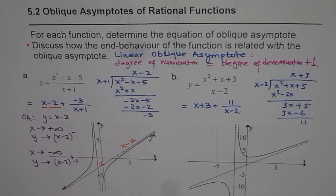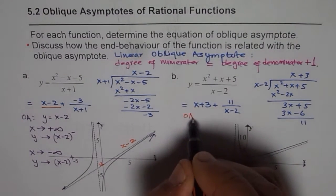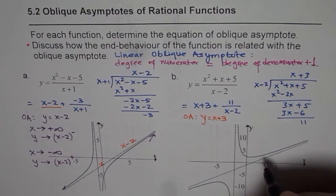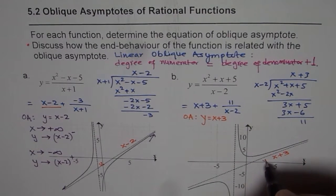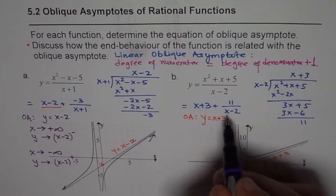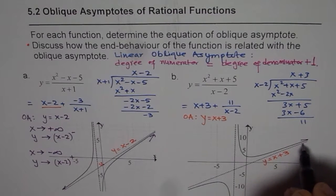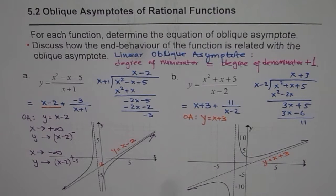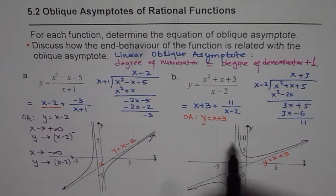The oblique asymptote in this case is y = x + 3. For end behavior: when x is large and positive, the remainder 11/(x-2) is positive, so the rational function is above the line. But if x is negative, the rational function is less than the line — it approaches from below. Understanding this end behavior really helps us sketch a neat and accurate graph of the function.